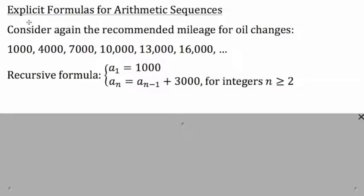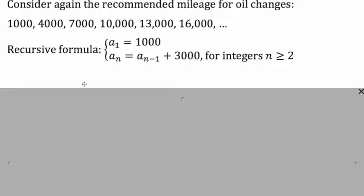We want to find a way to generate an explicit formula for arithmetic sequences. The advantage of an explicit formula is that you can generate any term immediately, without having to generate all the terms leading up to it. Using the recursive formula, if we wanted the 50th term, we would have to find all 49 terms before it. An explicit formula allows us to find the 50th term directly, without generating any prior terms.